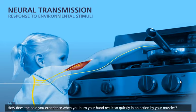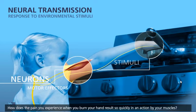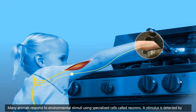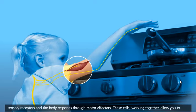How does the pain you experience when you burn your hand result so quickly in an action by your muscles? Many animals respond to environmental stimuli using specialized cells called neurons. A stimulus is detected by sensory receptors and the body responds through motor effectors. These cells working together allow you to respond very quickly to threats.